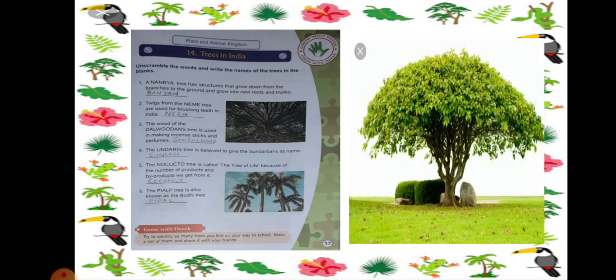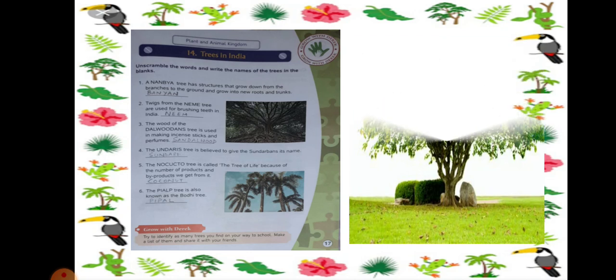So the last one, number 6. This is a peepal tree and it is also known as bodhi tree because Gautam Buddha had attained enlightenment under this tree. So this tree is also called bodhi tree and it looks somewhat like this. So this is all about trees in India.